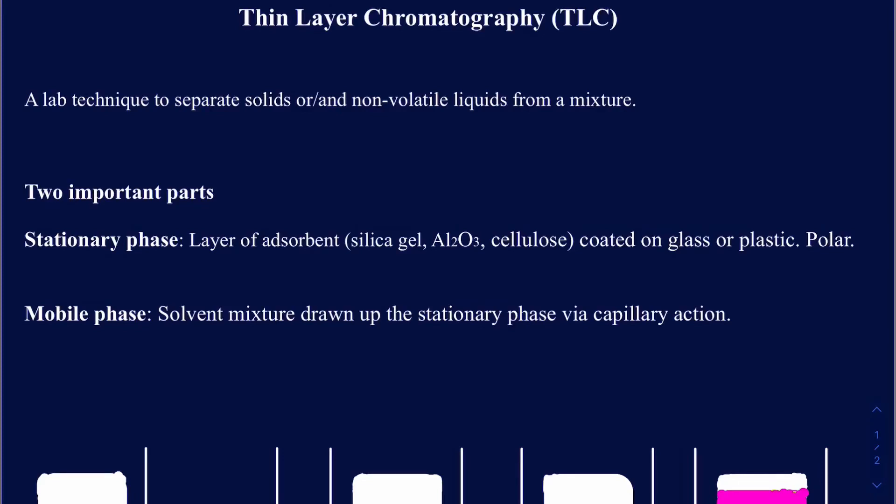In this session, we're going to be talking about a lab technique called thin layer chromatography that's used to separate solids from mixtures. It's not only limited to solids — you can also separate liquids as long as they are non-volatile. If you're trying to separate volatile liquids from a mixture, then distillation is going to be a better approach.